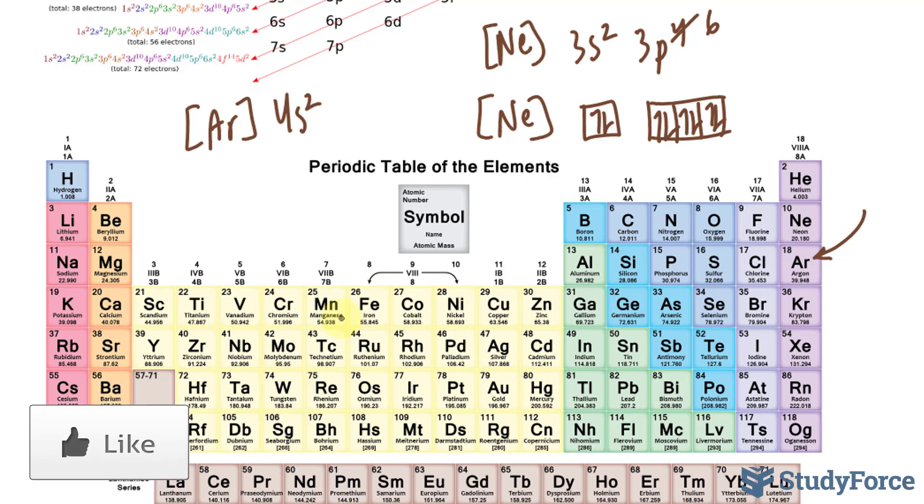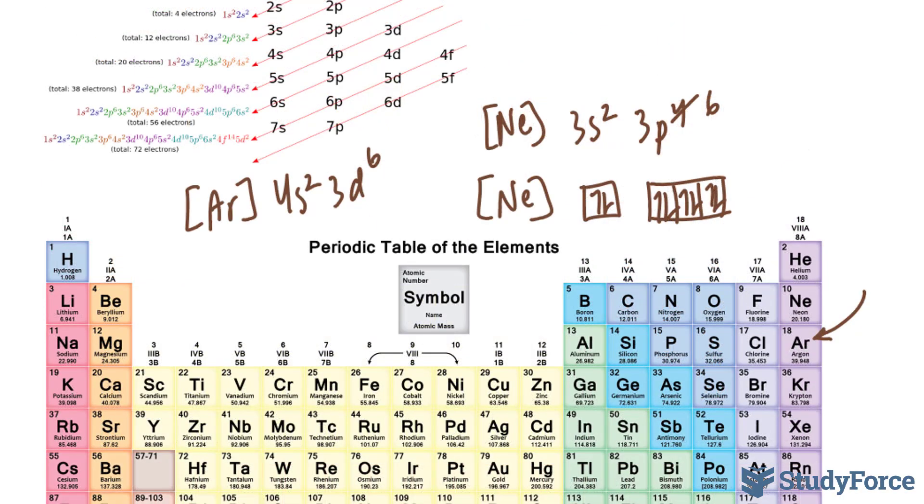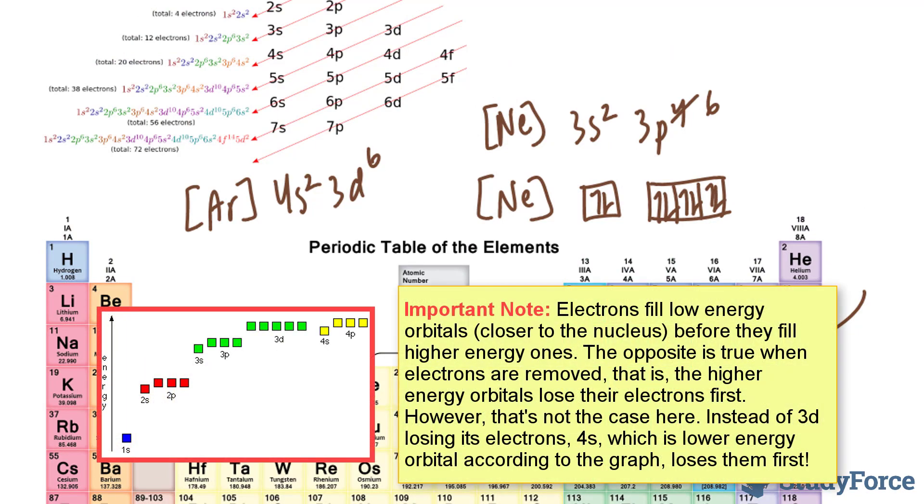And then 4s2. And normally iron, without the ionic form, would be 3d6. Now, since iron has lost three electrons, and it's a transition metal, we remove the electrons from 4s orbital, before removing electrons from the 3d orbital.